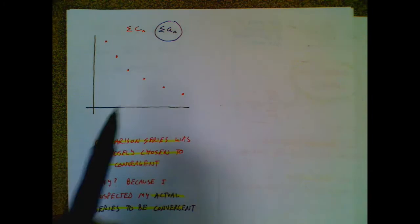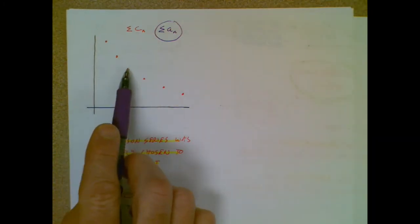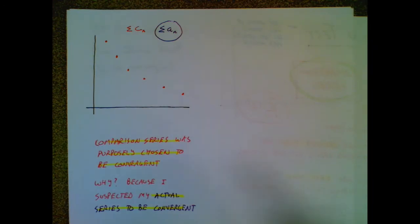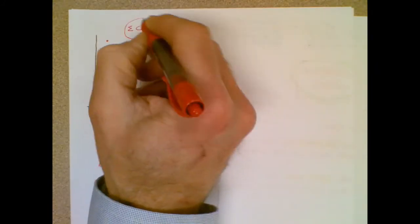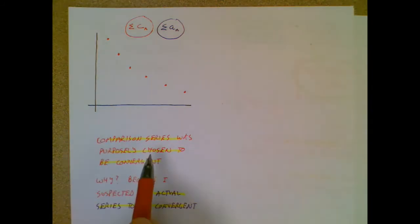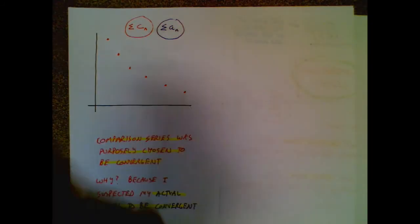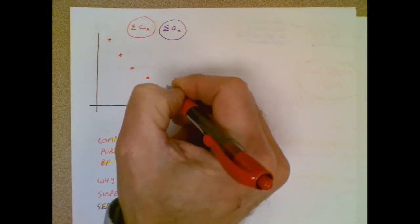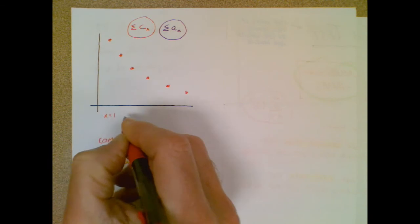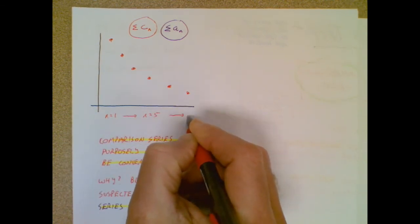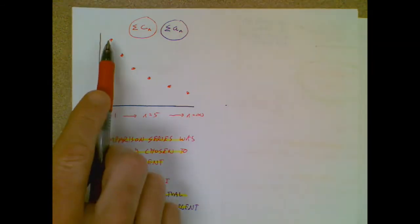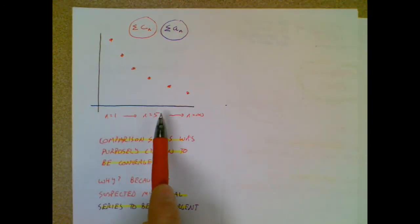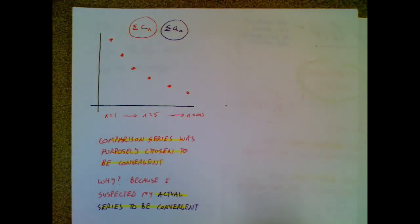Now is the time for some deep intuition. In this informal graphic, each one of these red dots represents a value from my comparison series. I'm suspecting the actual series to be convergent, so I've chosen a convergent comparison series. If my comparison series is convergent, as I plug in more and more values of n — heading along the n-axis towards n equals infinity — the values of each term are going to be smaller and smaller. That's what happens with a convergent series.